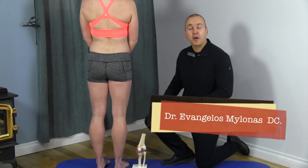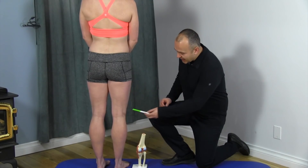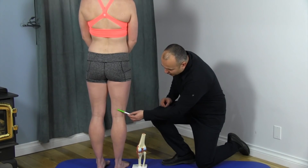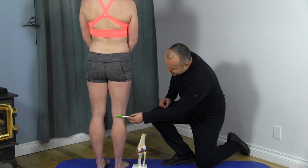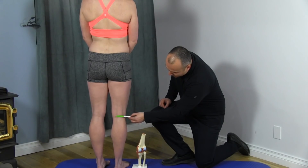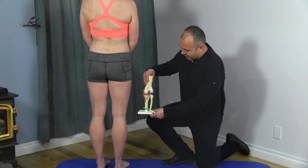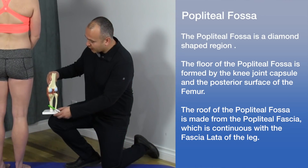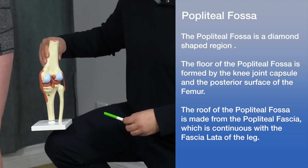Let's discuss the popliteal fossa. The popliteal fossa is the depression in the back of the knee. On Mickey, the center of that popliteal fossa would be the crease right here in the back of her knee. If we take a look at the model here, we can look at the osseous and ligamentous structures.